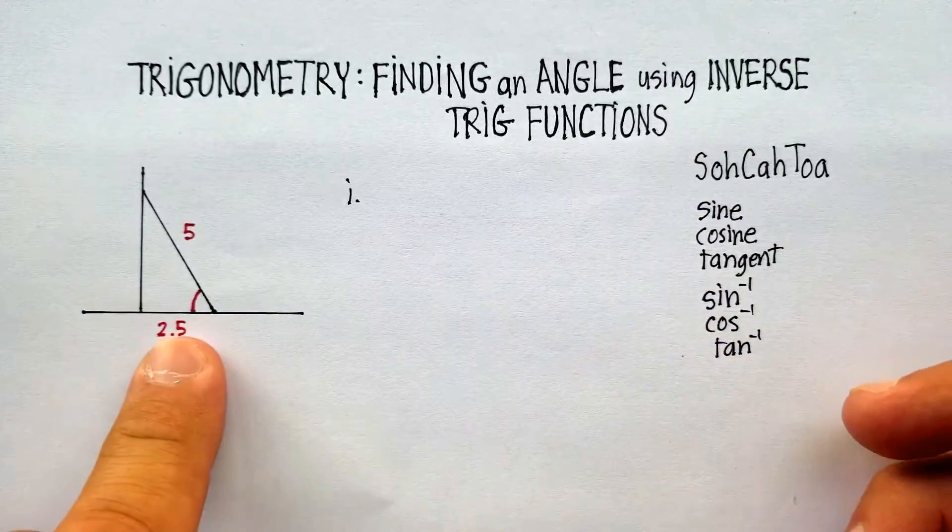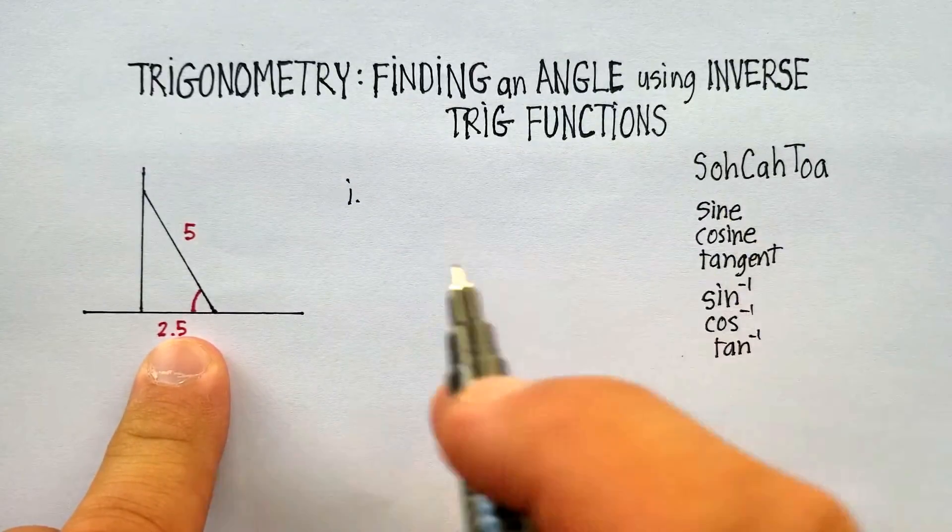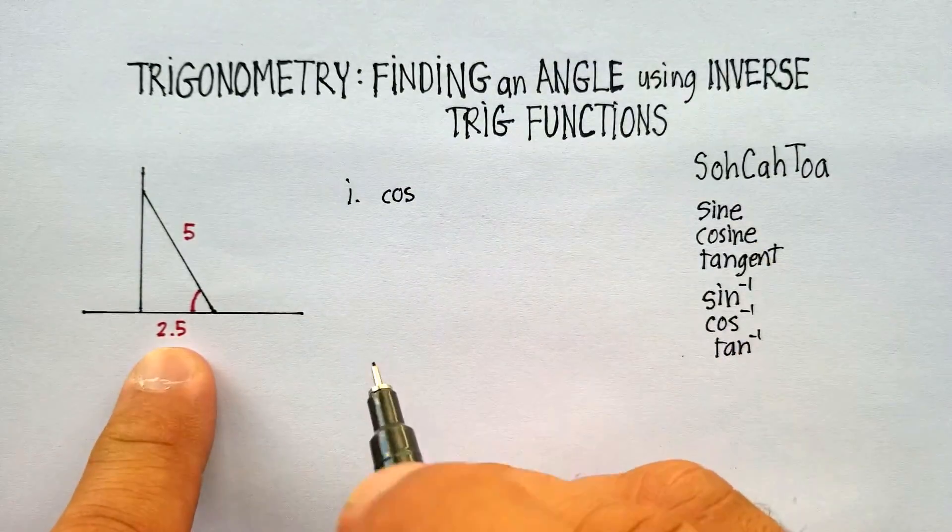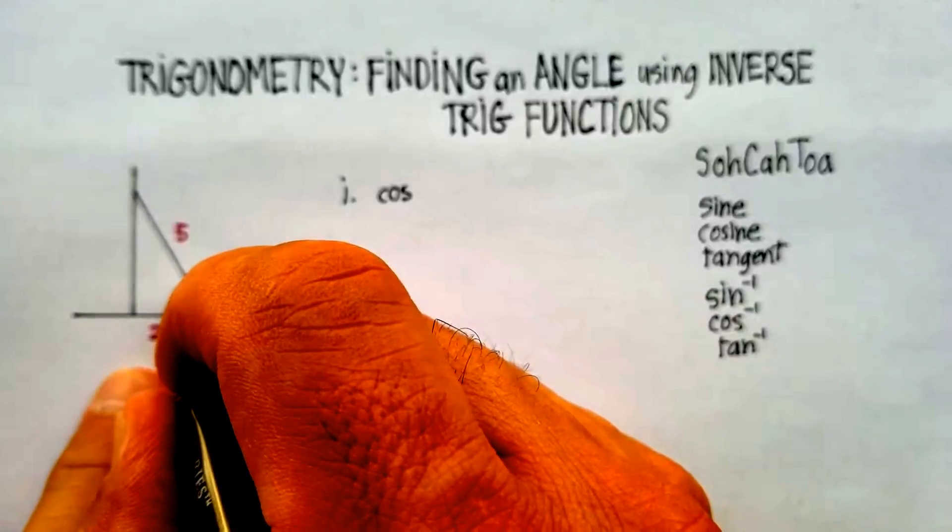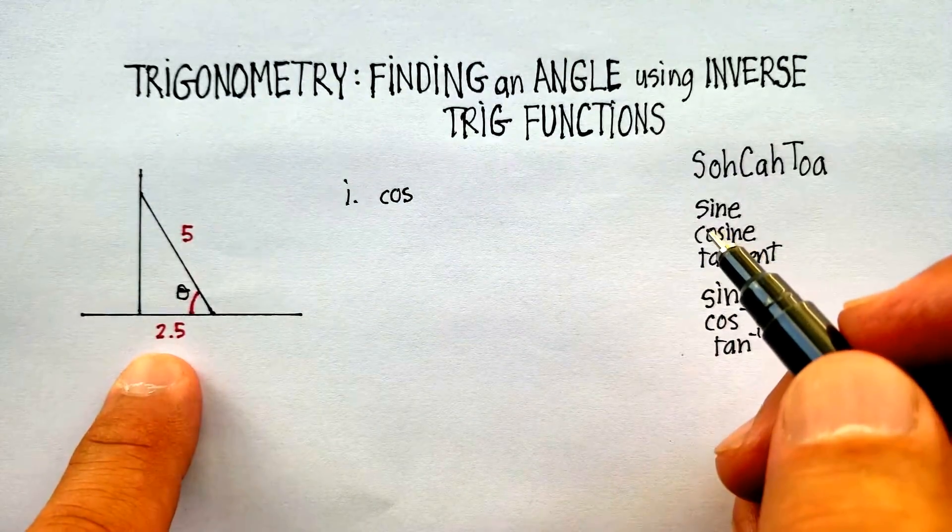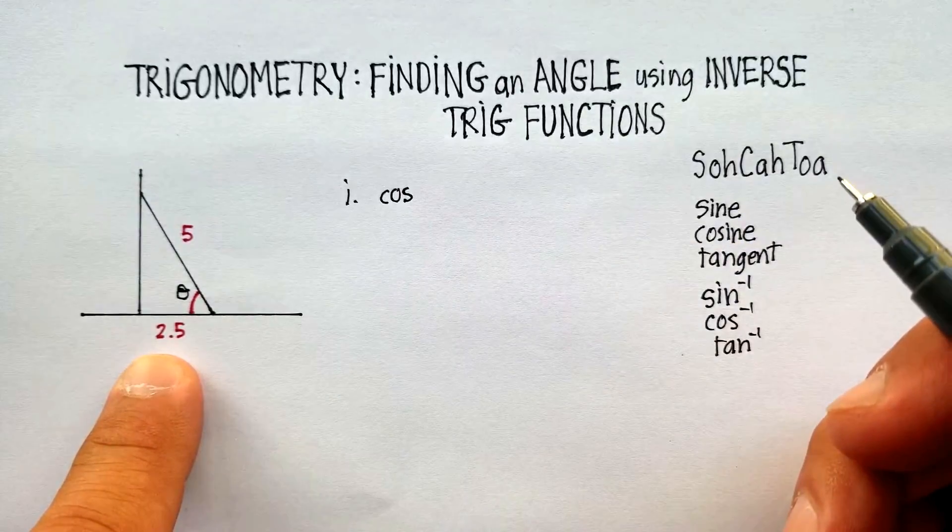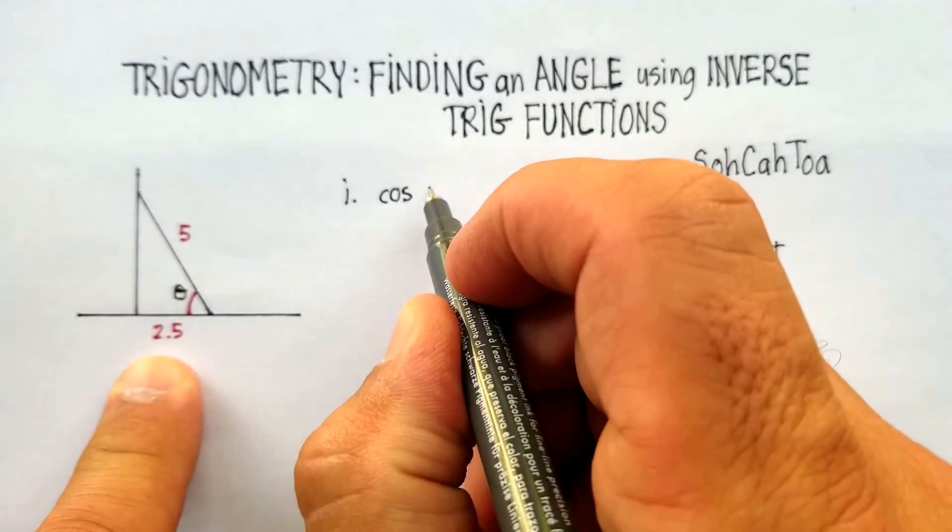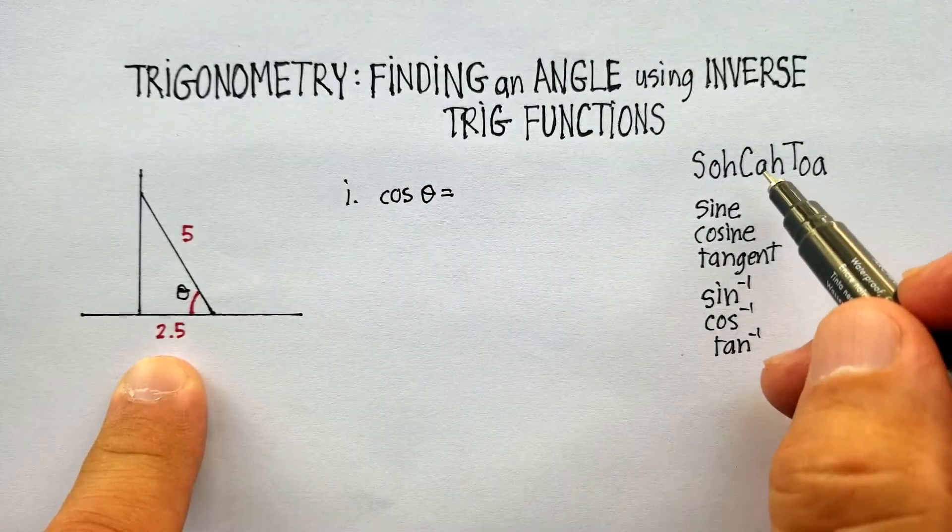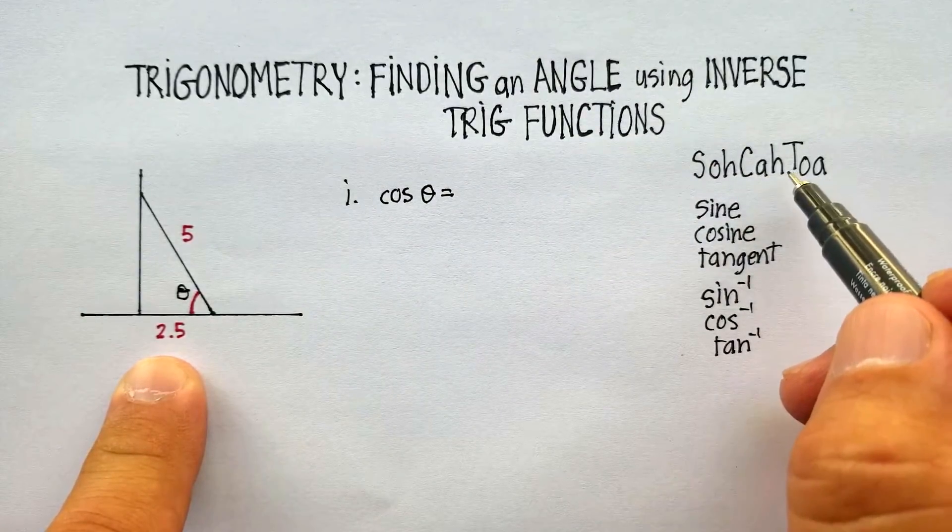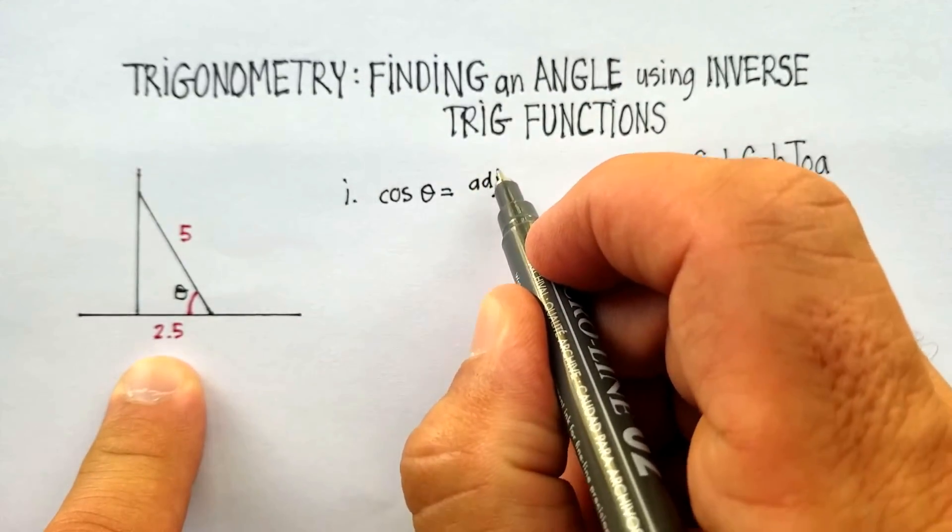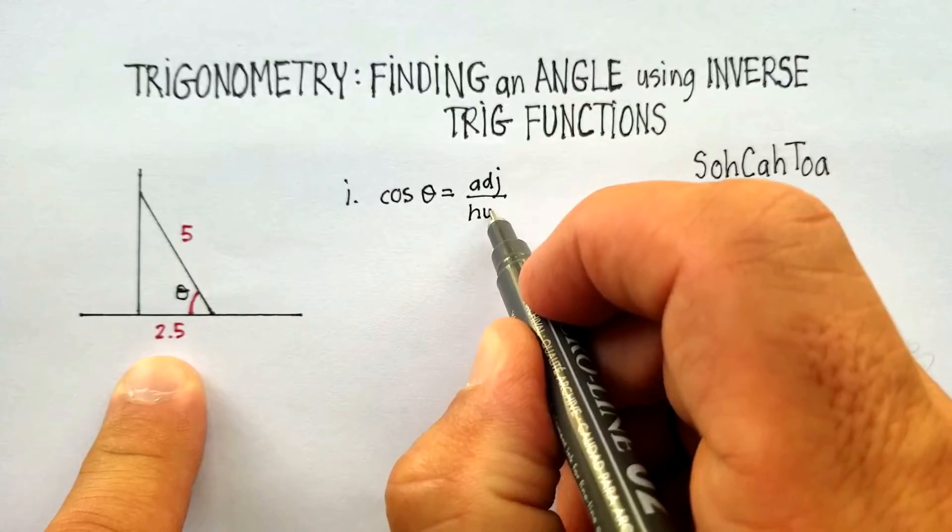So let's actually use cosine. We'll say cosine, and that's how you abbreviate cosine. And we're going to call this angle theta, which is a common name of an unknown angle. So we'll say cosine of theta will be equal to the adjacent over the hypotenuse.